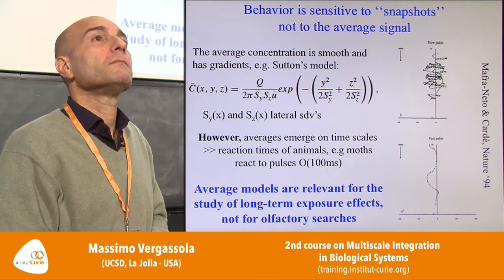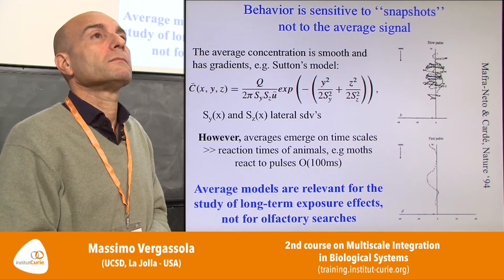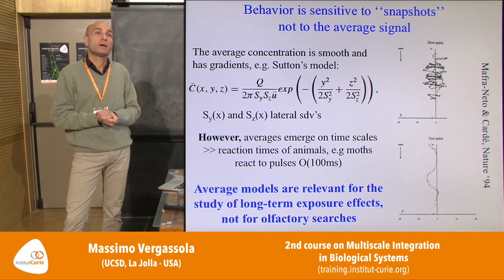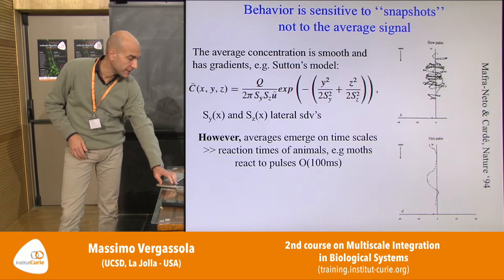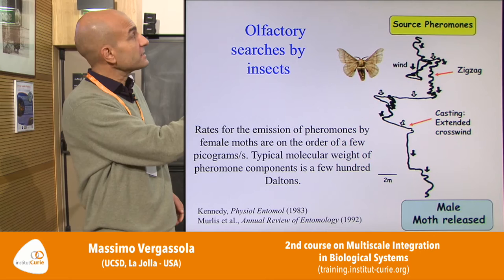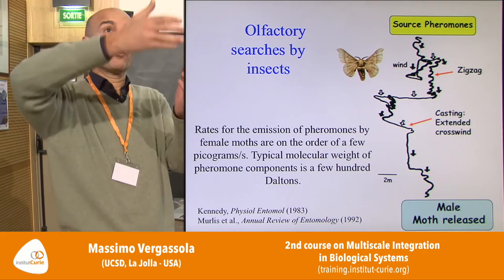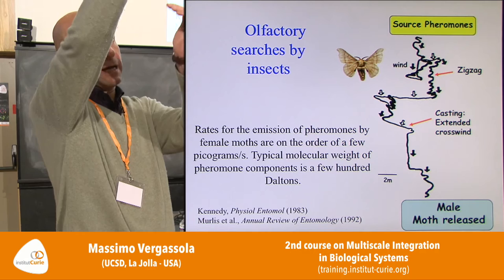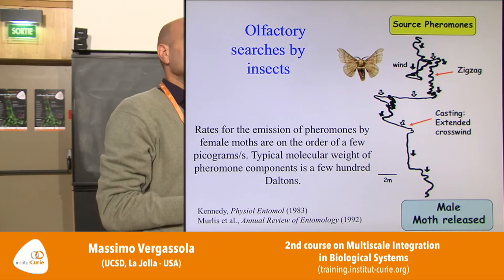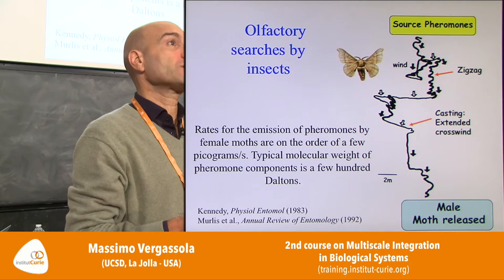Another question: how does the moth know to go against the wind? Moths have detectors of wind, so they know the local direction of wind. The typical behavior is that whenever they detect something, in the zigzag phase they detect molecules and, since molecules come downwind, the most probable source direction is upwind — so they move upwind. When they detect pheromones, they also sense the wind simultaneously, and they surge upward.